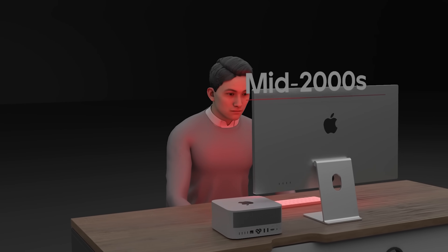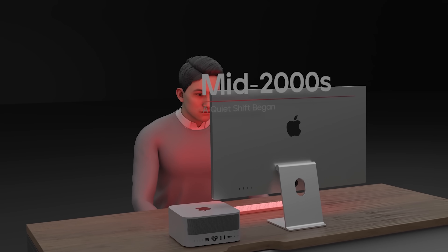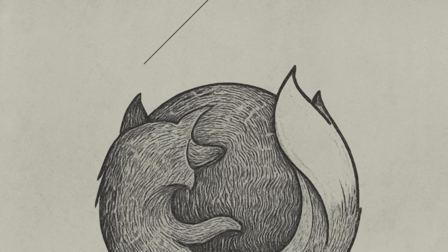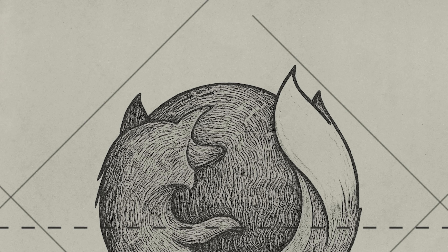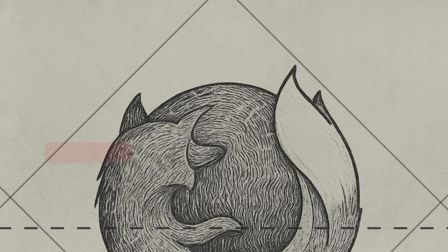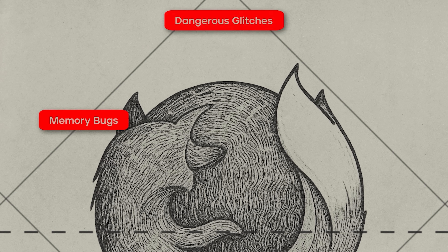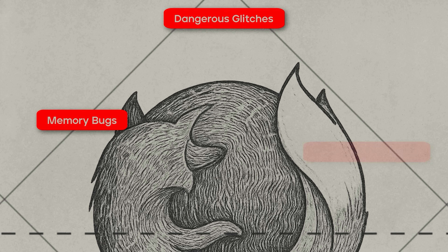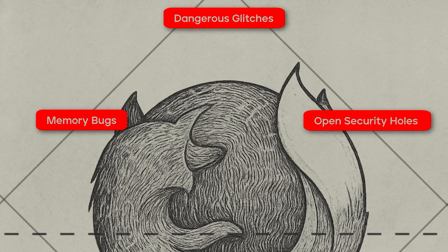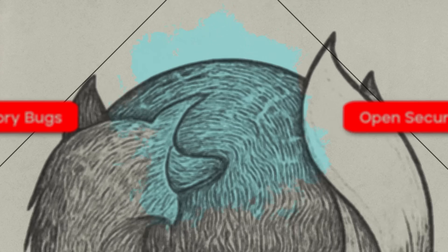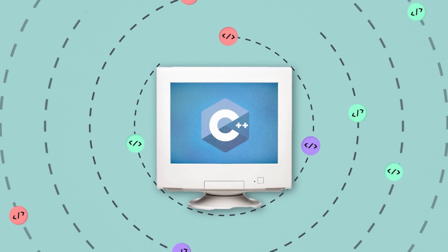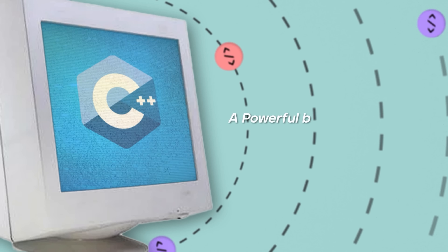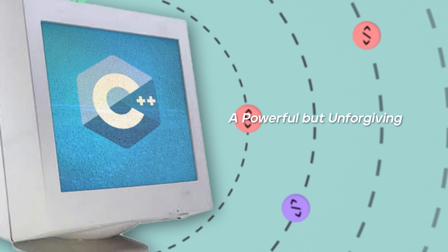In the mid-2000s, a quiet shift began in the world of software. For years, browsers like Firefox had been plagued by elusive memory bugs — dangerous glitches that could crash systems or open security holes. Many of these flaws came from low-level code written in C++, a powerful but unforgiving language.